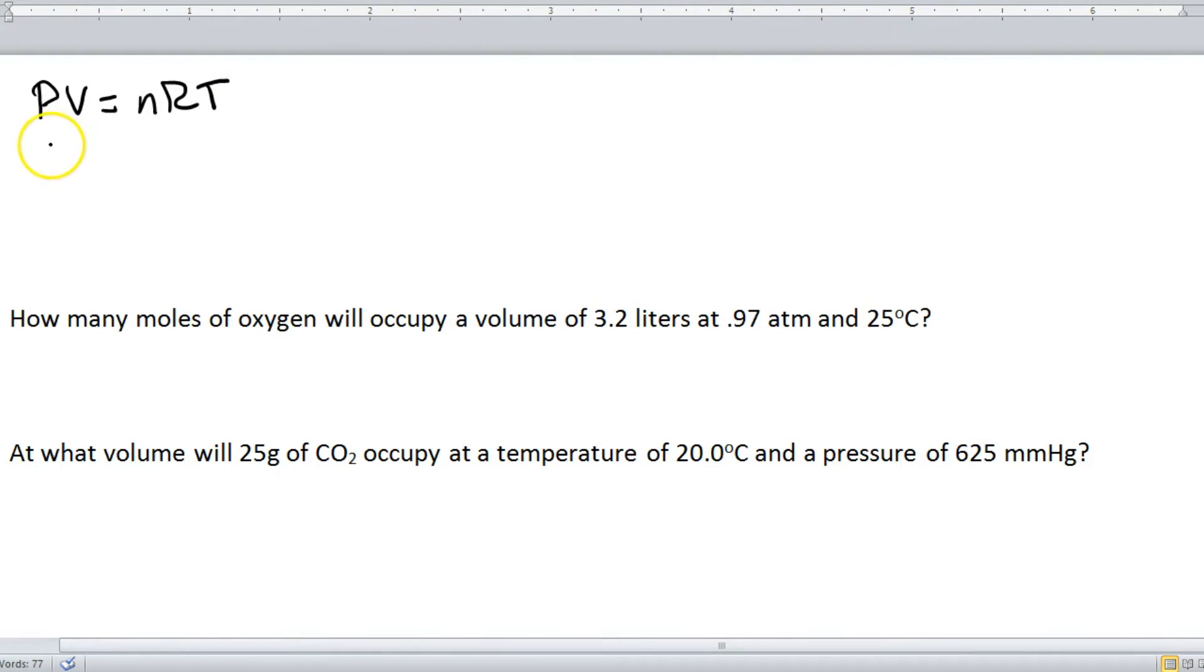So here we go with Puvnert. We have the same four variables that we have in all the other equations. We've got pressure, volume, moles, and temperature. The only thing that I'm going to point out here is that volume must be in liters. So if the question gives you milliliters, simply divide by 1,000 and you'll be good to go.